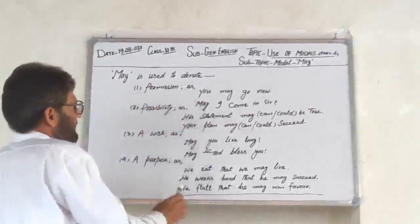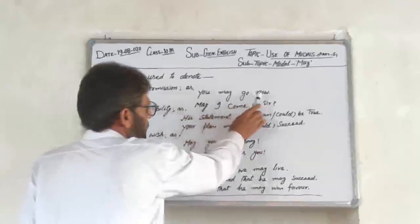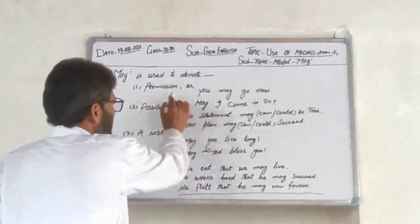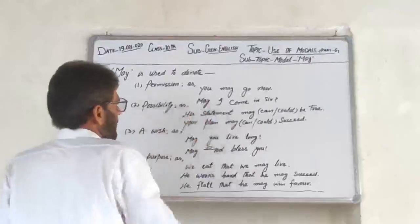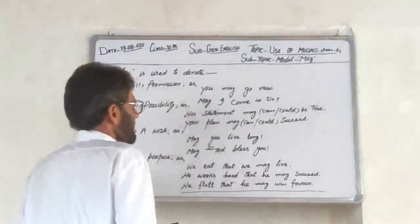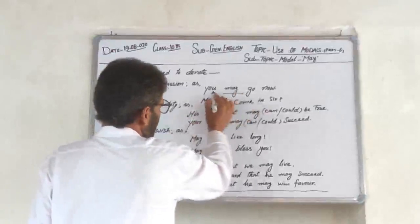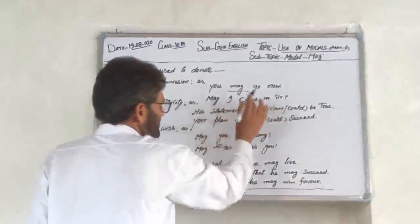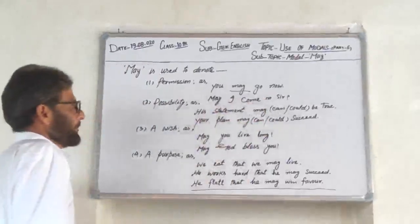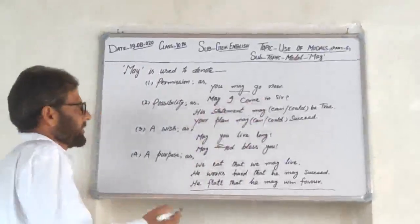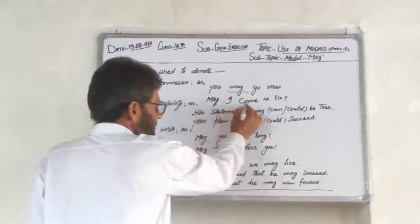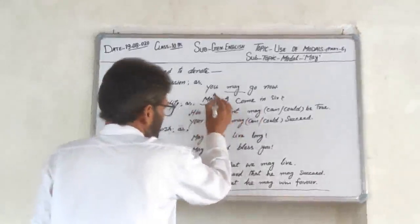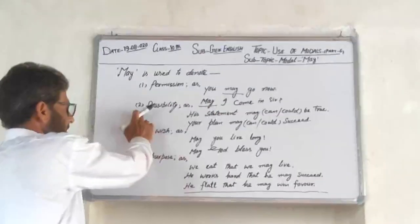Permission — as in: 'You may go now.' یہاں پے Permission کا اشارہ ہو تو ہم Modal May کا استعمال کر سکتے ہیں، جیسے 'You may go now.' دوسری مثال: 'May I come in, sir?' یہاں پے بھی Permission مانگی جاتی ہے، تو یہاں بھی Modal May کا استعمال کیا۔